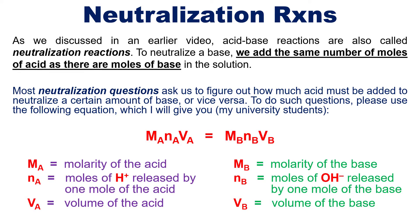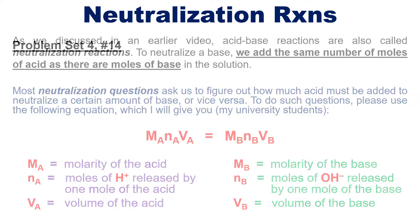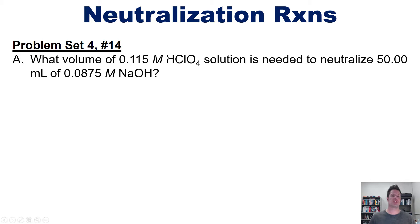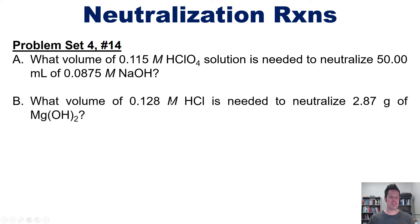You'll notice some similarity between this equation and the equation M1V1 = M2V2 that I taught in the preceding video, linked in the description below. To best show how to use this, let's look at an actual problem from my homework assignment. What volume of this concentration of acid solution is needed to neutralize 50 milliliters of this concentration of sodium hydroxide? And further, what volume of this concentration of HCl is needed to neutralize 2.87 grams of magnesium hydroxide?